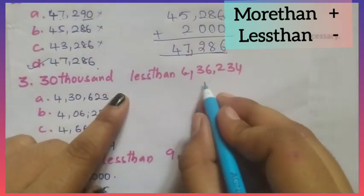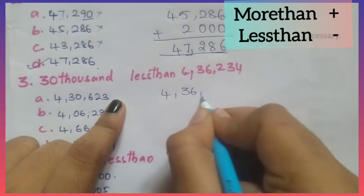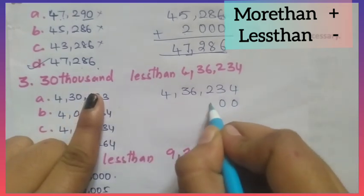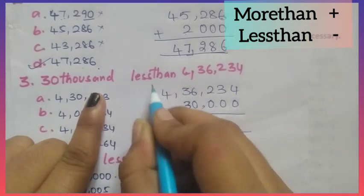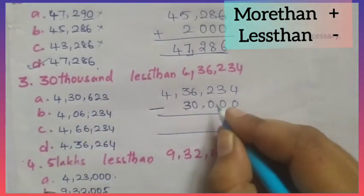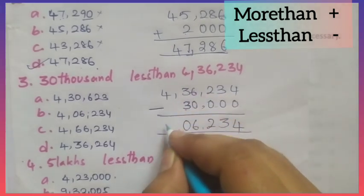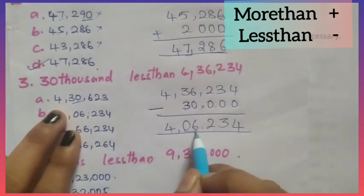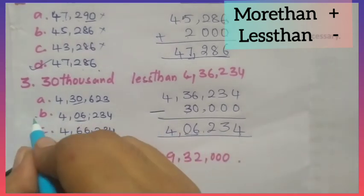Next: 30,000 less than 4,36,234. Write 4,36,234 and subtract 30,000. Less than means subtraction: 4−0=4, 3−0=3, 2−0=2, 6−0=6, 3−3=0, 4 remains. The answer is 4,06,234.